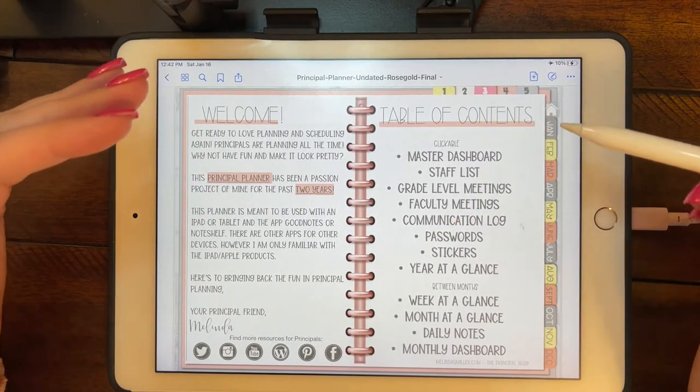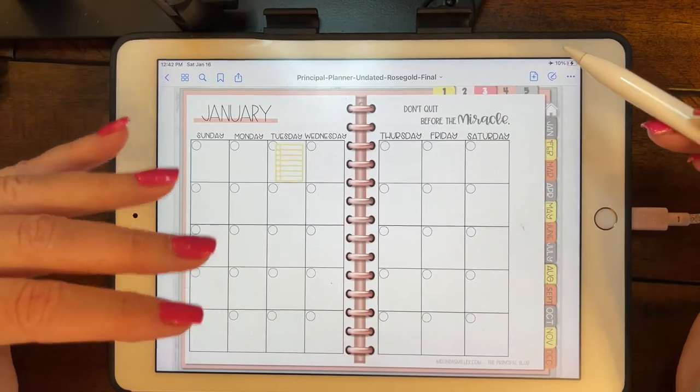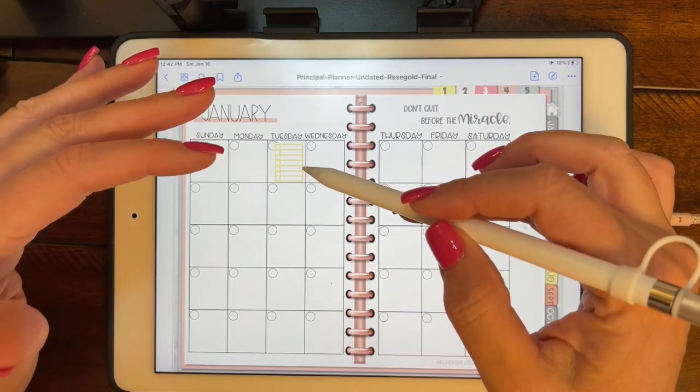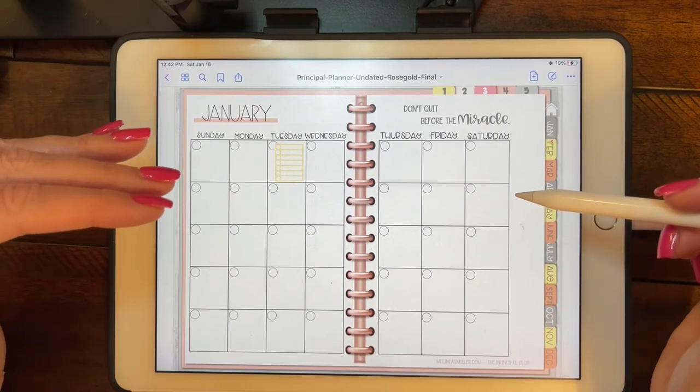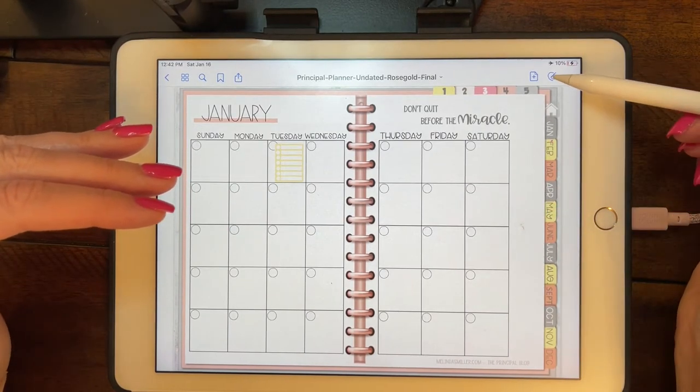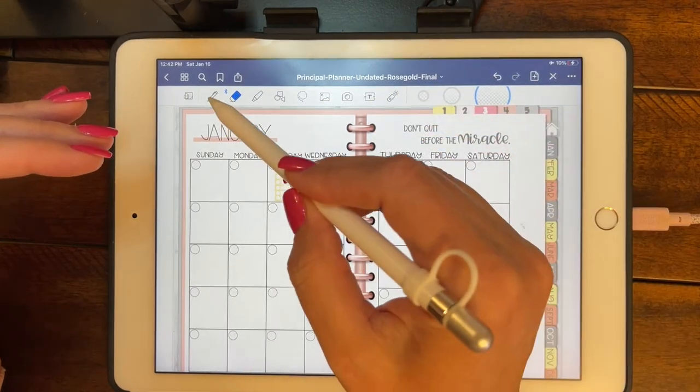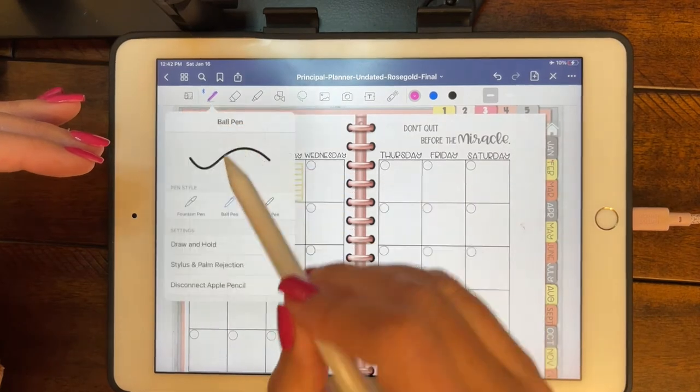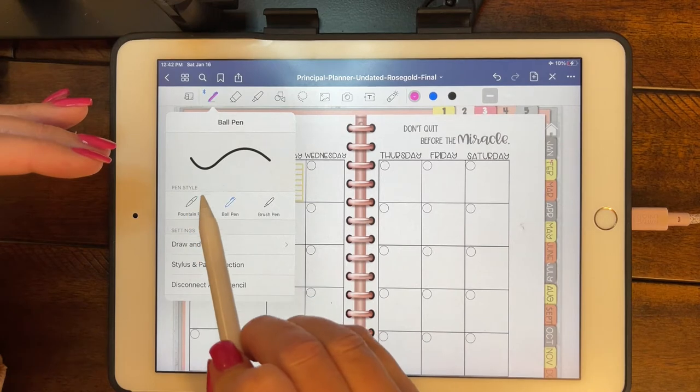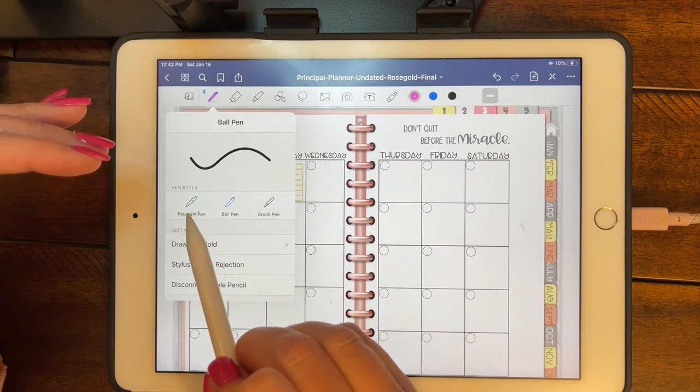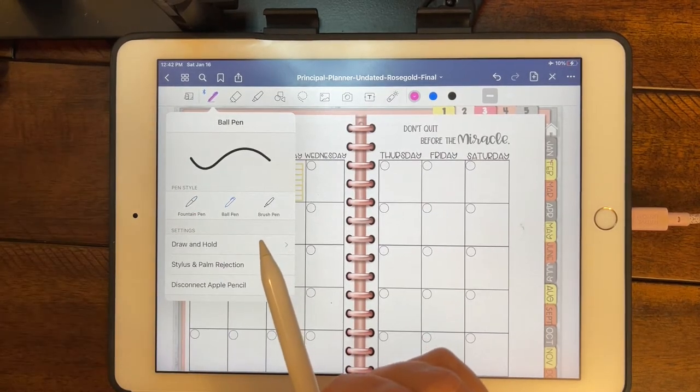Let's just say you just got the planner and you just want to set it up. I'm going to go to January and I just want to set up the calendar right now. I'm going to go up to the pen so that I can see all the tools. I'm going to select my pen and I'm going to select the ball pen for right now because the other two pens are pressure sensitive and I just want my line to look like that. I don't want it to change with pressure.